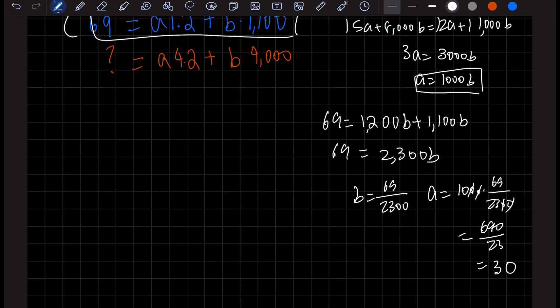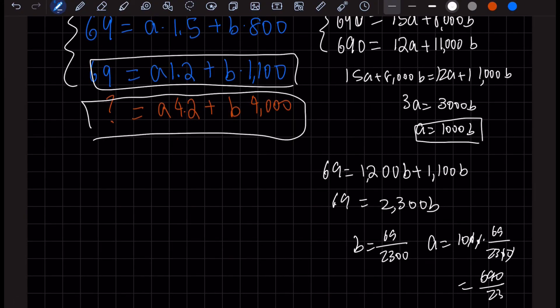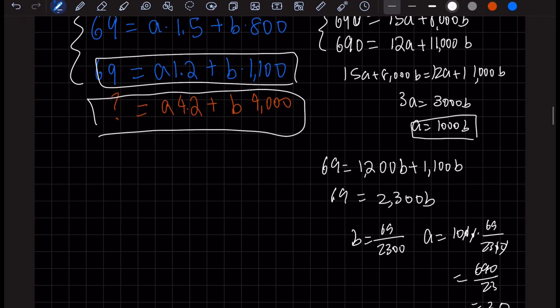That's all fine and dandy. Now let's plug it into this orange equation right here and find our answer. A is 30 times 4.2 plus 4,000 times 69 over 2,300 will be our glorious answer.